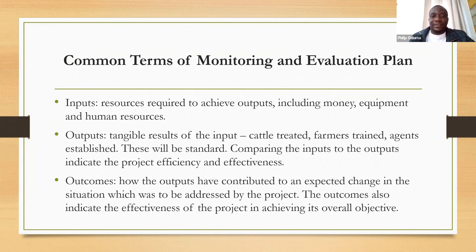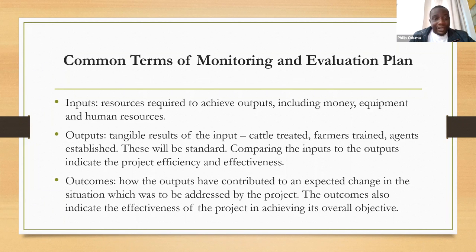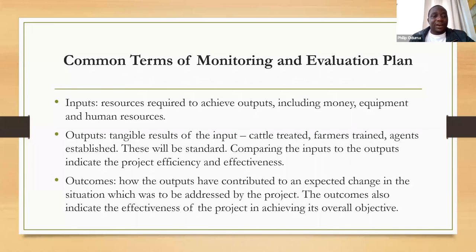The common terms used in an M&E plan. First we have input. Input is the resources that we use — it includes human resources, equipment, and financial resources. Equipment could be big machines or even a pen — anything that enables us to carry out the activity that is not human and not financial. Financial input is money. Whenever you hear us talking about input, it is any resource that we are inputting in a project or activity for it to happen.